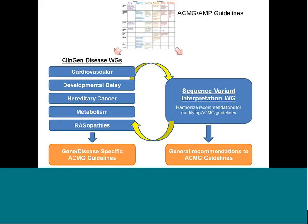Within ClinGen, we have different working groups taking the ACMG guidelines and making disease-specific specifications — such as what criteria to use, allele frequency thresholds, how many segregations you need, or what the disease mechanism is. We also have the Sequence Variant Interpretation workgroup, which Les B-Seeker and I co-chair. This group works to harmonize approaches across clinical domain working groups and provides general gene-independent recommendations applicable to multiple groups.